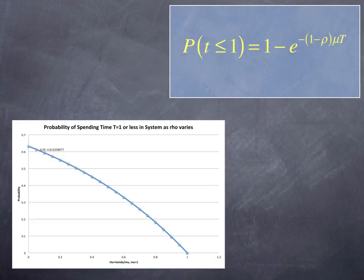The probability that you spend time t equals 1 or less in a system decreases as capacity utilization goes to 1. If you are fully utilized, the probability of spending less than 1 minute in a system goes to 0. This is how the function works.